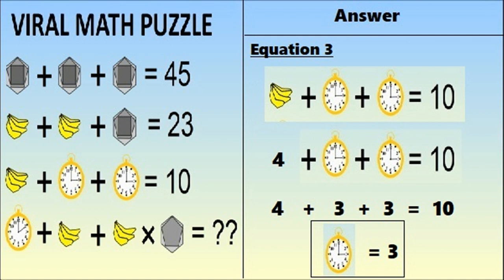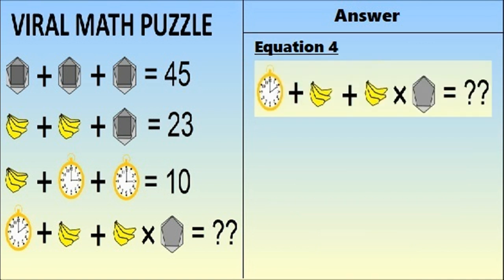Now moving on to the last equation, equation number 4. The clock shown here has time 2 — it is not the same as the clock in equation 3 which showed time 3. The bananas are also different from those in equations 2 and 3; in this equation there are only 3 bananas, not 4.